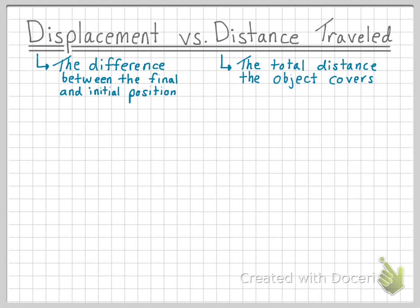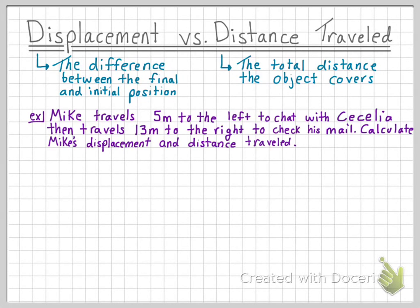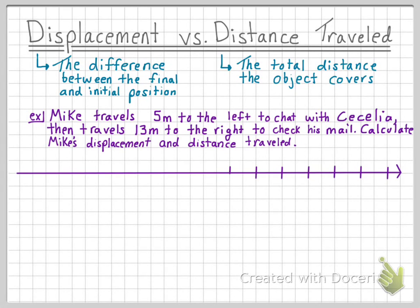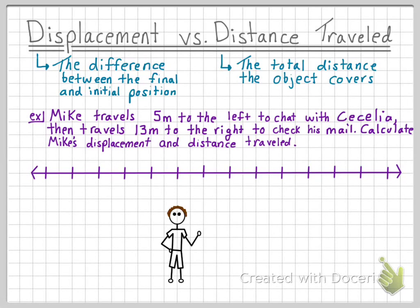Let's start with an example to further compare these two quantities. Mike travels 5 meters to the left to chat with Cecilia, then travels 13 meters to the right to check his mail. Calculate Mike's displacement and distance traveled. Let's draw a one-dimensional coordinate system to describe Mike's movement, and place Mike towards the middle, at the origin.